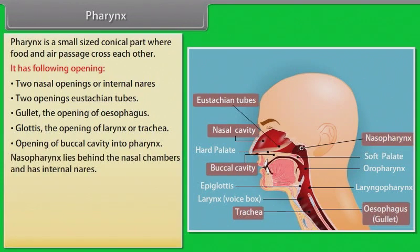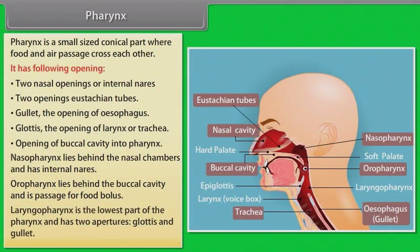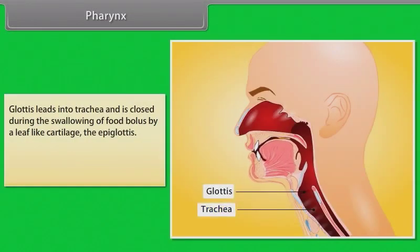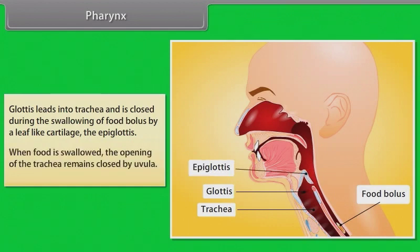The nasopharynx lies between the nasal chambers and has internal nares. The oropharynx lies behind the buccal cavity and is a passage for the food bolus. The laryngopharynx is the lowest part of the pharynx and has two apertures: the glottis and the gullet. The glottis leads into the trachea and is closed during swallowing of the food bolus by a leaf-like cartilage called the epiglottis. When food is swallowed, the opening of the trachea remains closed by the uvula.